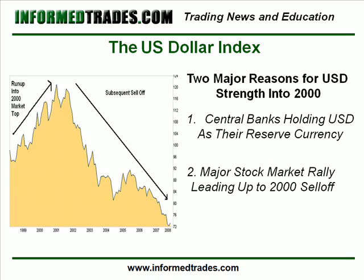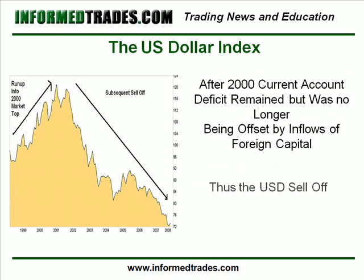Number two is, as most of you will remember, the NASDAQ top which happened in March of 2000 was preceded by a major bull market in the United States and one in which foreign investors were active participants. As we learned about in our lesson on capital flows, this creates a large demand for dollars, further helping to offset the large current account deficit. After the sell-off in the NASDAQ, however, foreign investors fled the U.S. stock market along with a lot of other traders and investors.